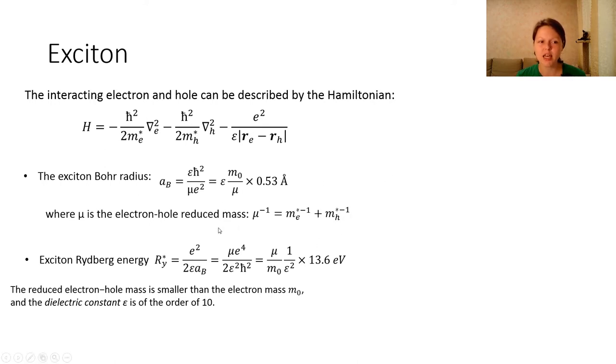We can also calculate the exciton Rydberg energy. The reduced electron-hole mass is smaller than the electron mass and the dielectric constant ε is on the order of 10. That's why the exciton Bohr radius is much bigger than that for the hydrogen atom and the Rydberg energy is significantly smaller. The exciton Rydberg energy is also called exciton binding energy.